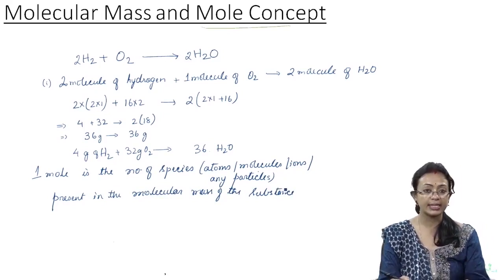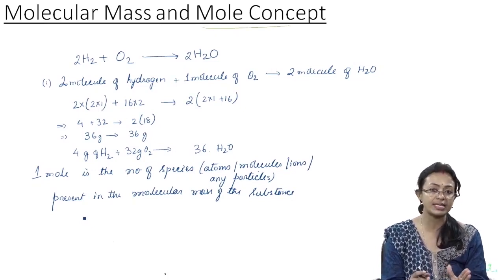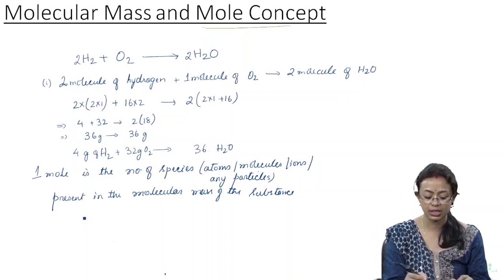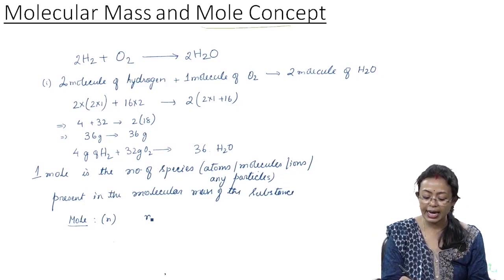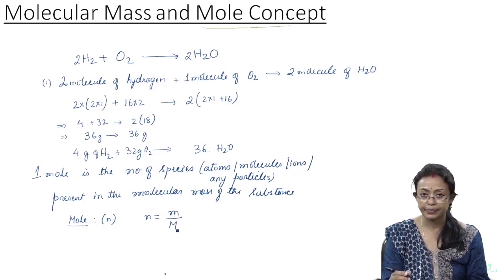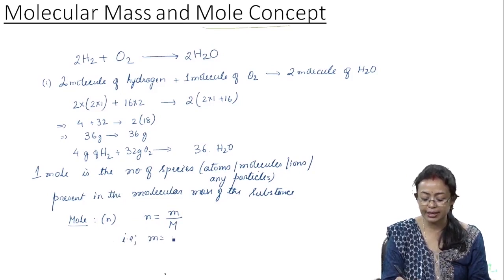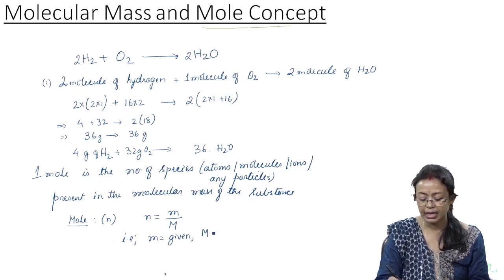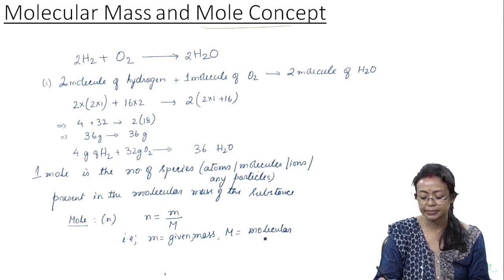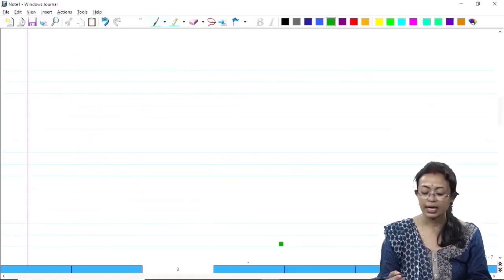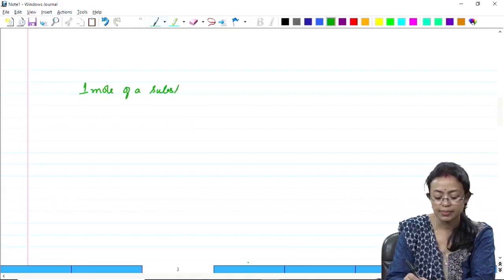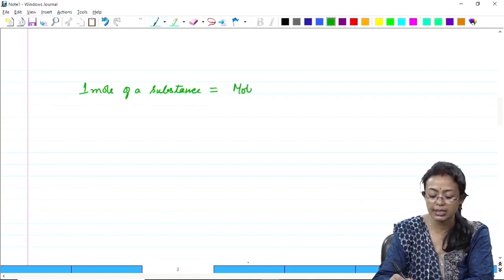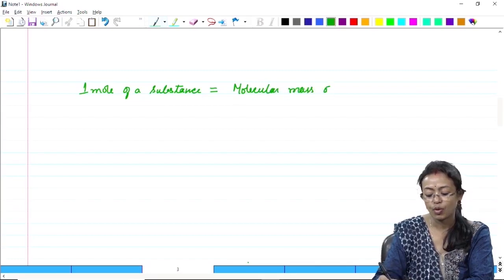The basic explanation is that if we take one mole of any substance, it is equivalent to the molecular mass of the substance. If the number of moles is represented by N, then N = m/M, where small m is the given mass and capital M is the molecular mass. In other words, one mole of a substance is equal to the molecular mass of the substance.